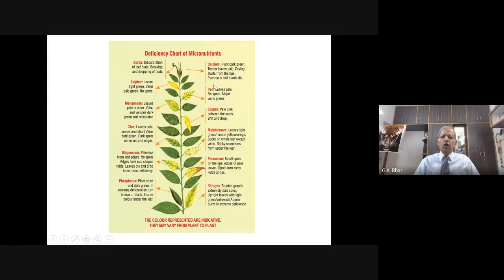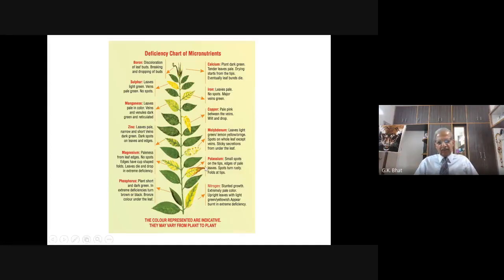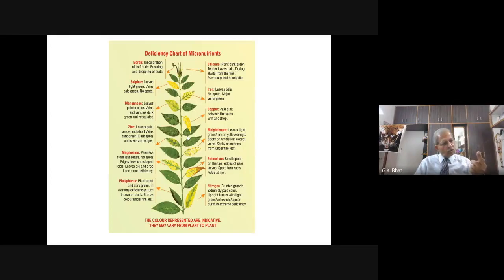That particular plant shows iron deficiency. This is a chart where all the different colorations of the deficiency of nutrients are brought together. Similarly, if you come across a leaf with small spots on the tips and edges of pale leaves, spots turning rusty, and wilting at the tip, this indicates deficiency of potassium. Farmers will pick one particular leaf, compare it with the chart they have, and identify the deficiency.